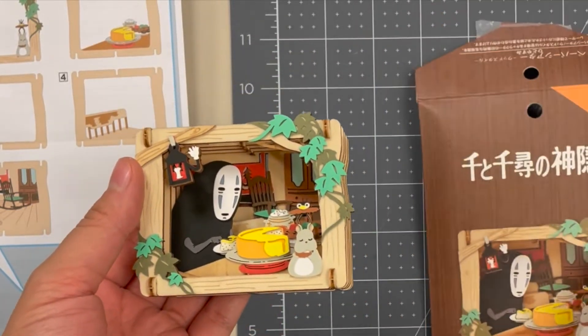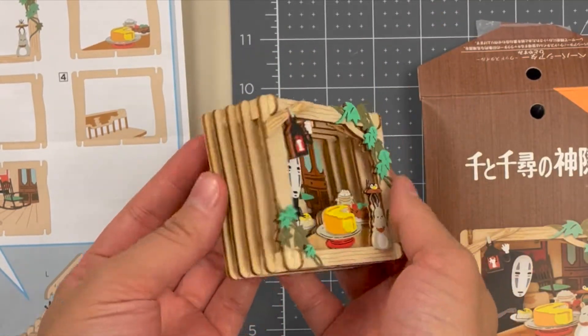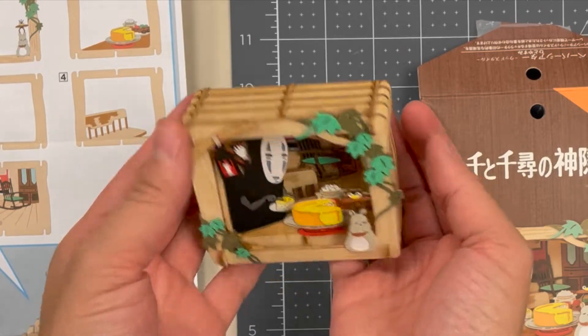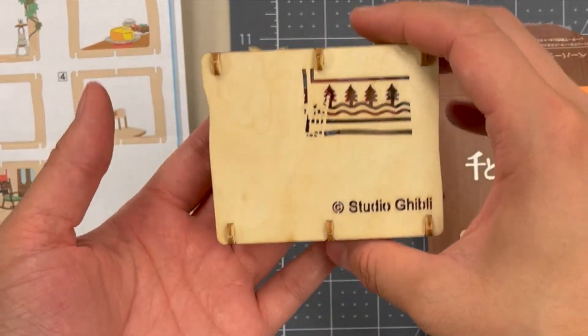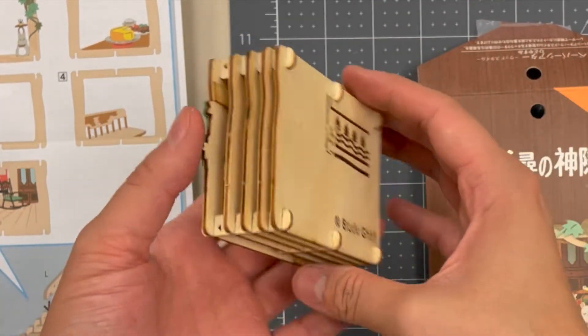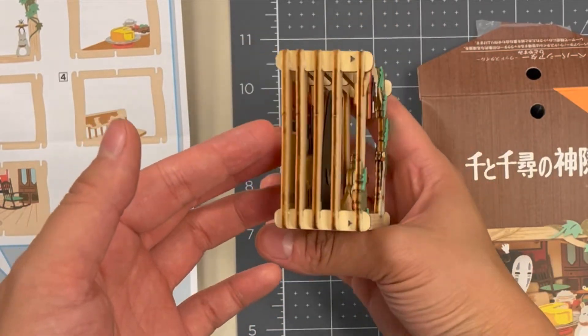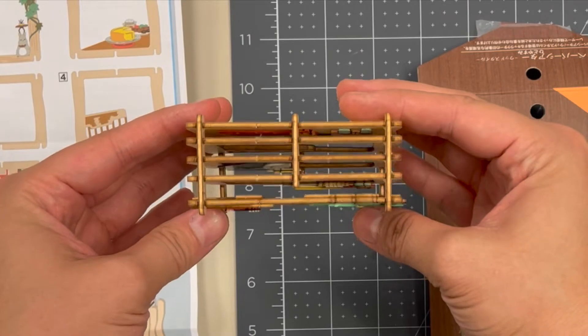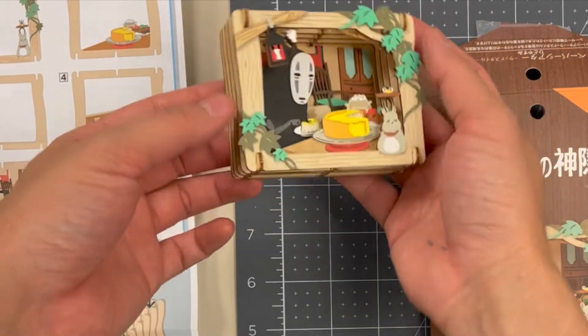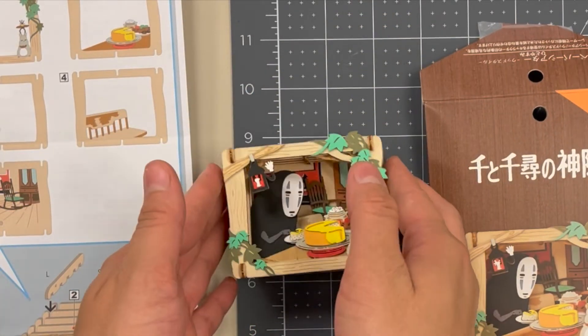Anyway, tangent aside, this is the final product. It's No-Face eating some—I don't know if that's cake or an omelet, but it looks good. Oh, it's definitely a cake. And yeah, if you make a paper theater, tag me on Instagram at Darby Fine Art and y'all have a good one. See ya.